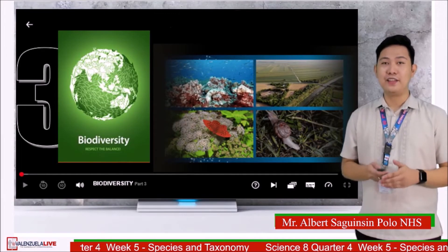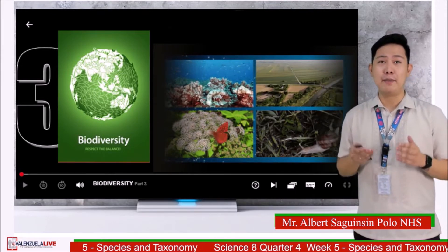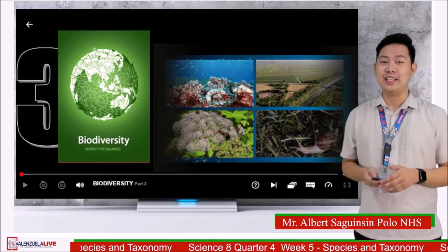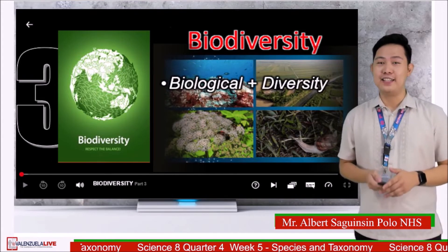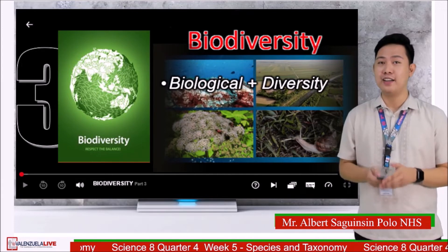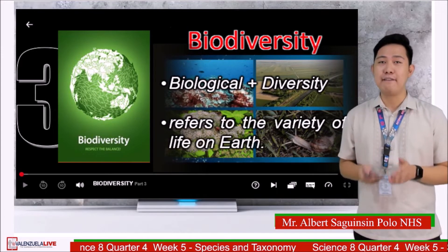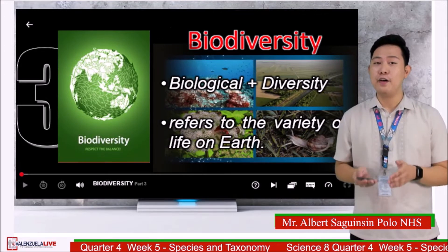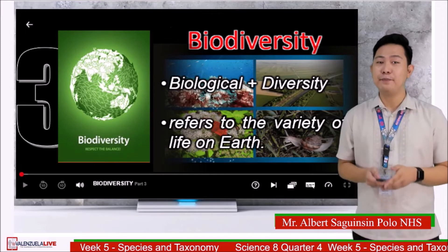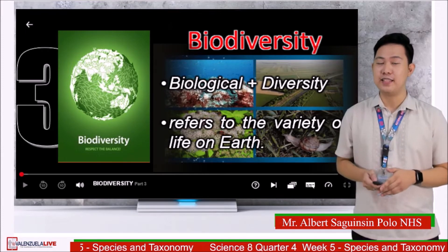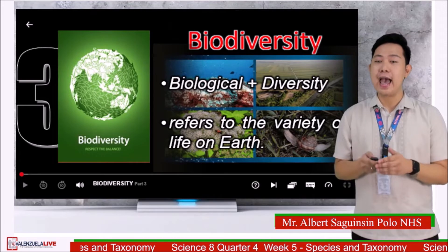From our activity, we can say that there are different forms of life that inhabit Earth. These organisms are all part of biodiversity. Biodiversity is the shortened word of biological diversity. This refers to all life forms that can be found on Earth, including plants, animals, fungi, protists, and microorganisms, as well as the communities they form and habitats they live in.